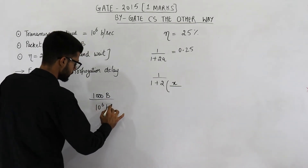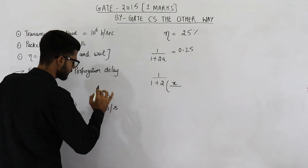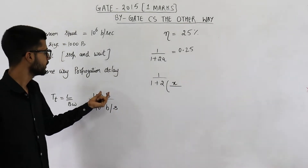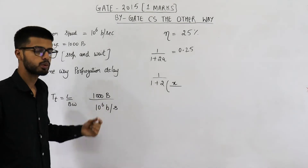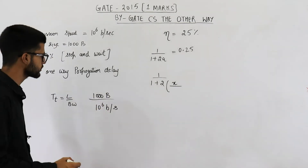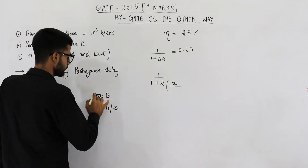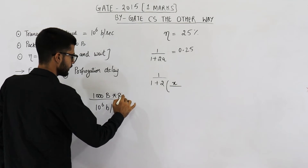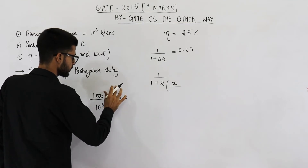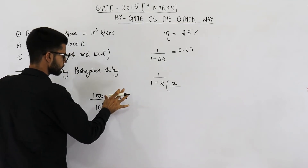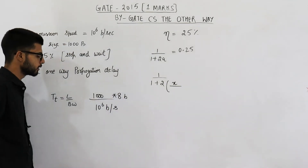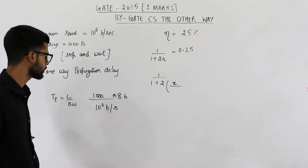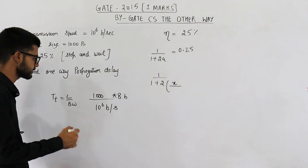The units are not equal — we need to convert bytes into bits, so we multiply by 8. That gives us 8000 bits divided by 10^6 bits per second, which equals 8 divided by 10^3 seconds, which is equal to 8 milliseconds. So transmission delay tt is 8 milliseconds.